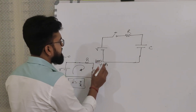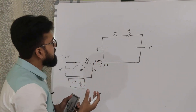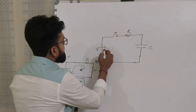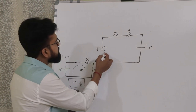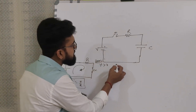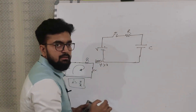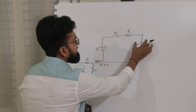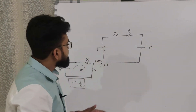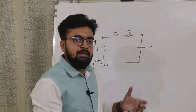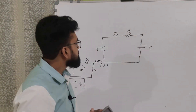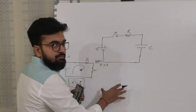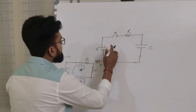For case 2, at time t greater than 0, when we close the switch, electrons from the negative terminal accumulate at the negative plate of the parallel plate capacitor, and holes accumulate at the positive plate. This is how the capacitor starts charging.